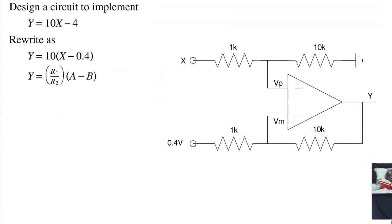Example of using an instrumentation amplifier. Suppose I want to build a circuit with a gain of 10X minus 4. I want to put it in this form. So let's rearrange it. It's 10 times the quantity X minus 0.4.